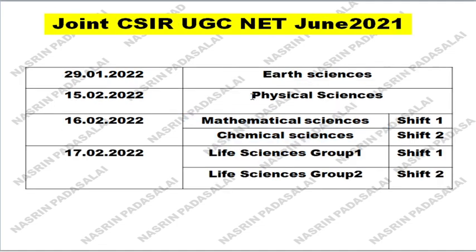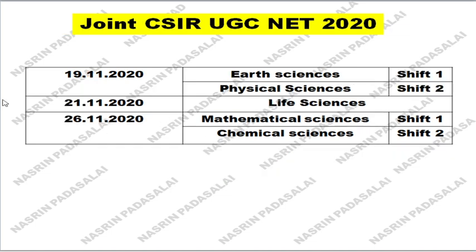Earth Sciences and Physical Sciences are conducted on separate dates. Life Sciences is also conducted in two groups, same as before. In 2020 as well, this was the pattern — Earth Sciences and Physical Sciences wrote on separate days, Life Sciences wrote separately, and Mathematical Sciences and Chemical Sciences wrote the examination on the same day.